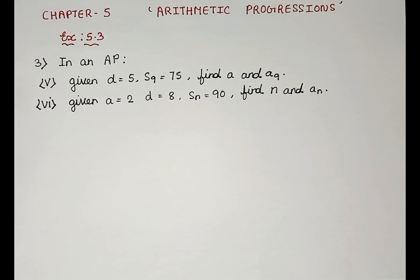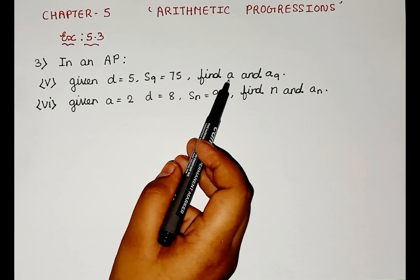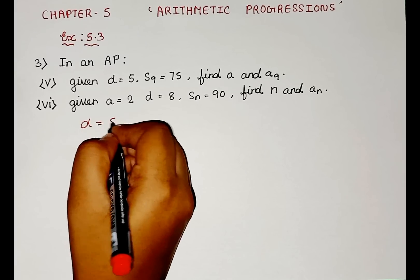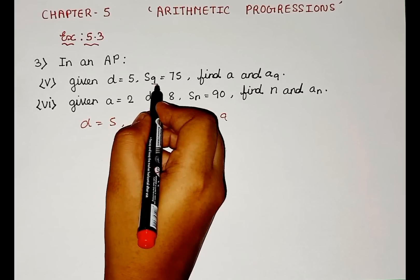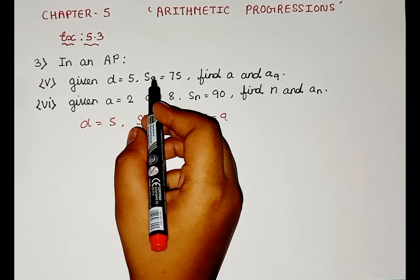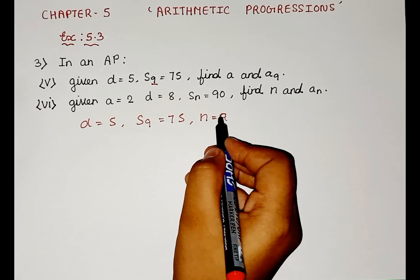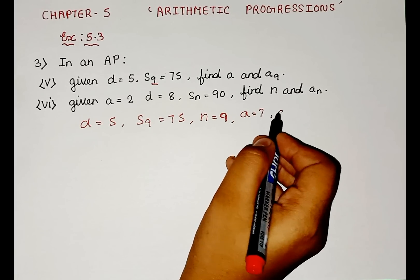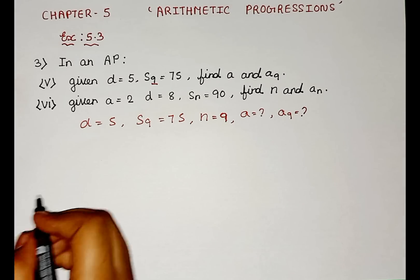So here we have the D value and S9 value that is 75. We have to find the AN and A9 value. So D is 5 and S9 is 75. The N value is 9, because here we have S9 — so in the place of 9, the SN value gives us N equals 9. We have to find A value and A9 value. So to find it, let us apply the SN formula.